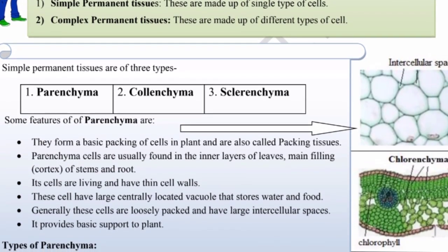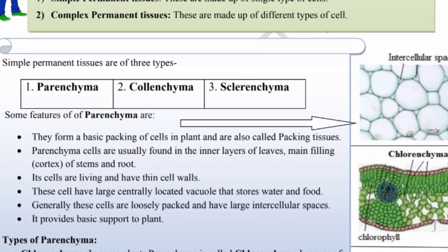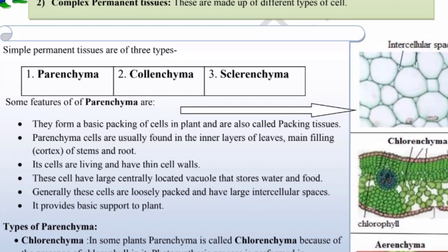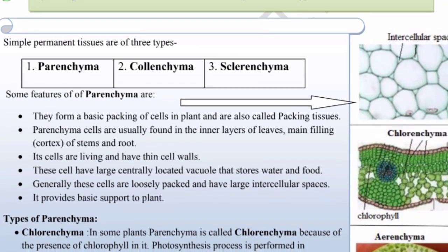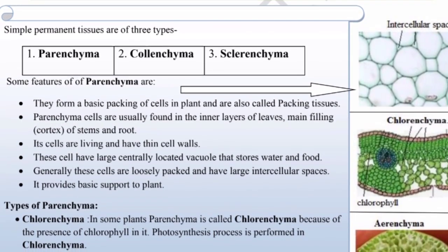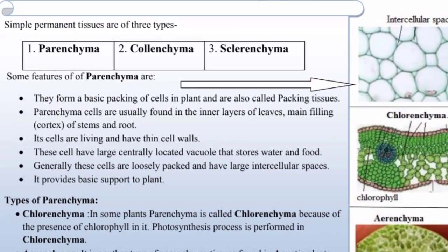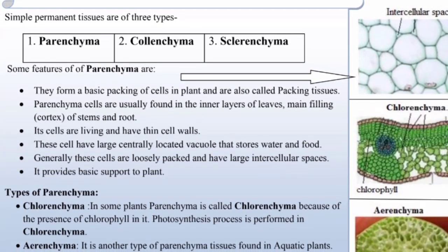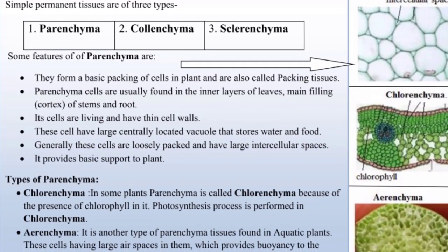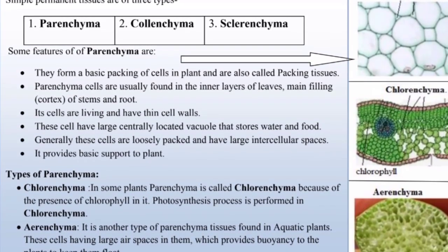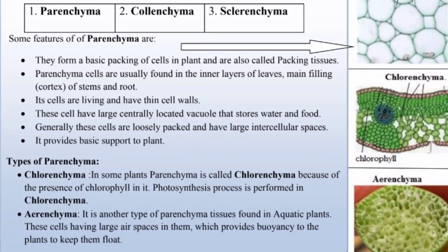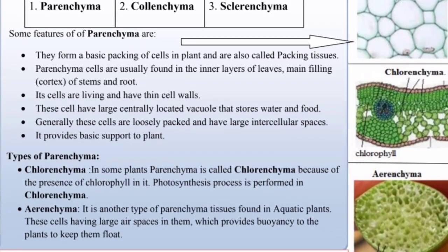Some features of parenchyma are: they form a basic packing of cells in plants and are also called packing tissues. Parenchyma cells are usually found in the inner layer of leaves, main filling of stems and roots. Its cells are living and have thin cell walls. These cells have large centrally located vacuoles that store water and food. Generally, these cells are loosely packed and have large intercellular spaces. It provides basic support to the plant.